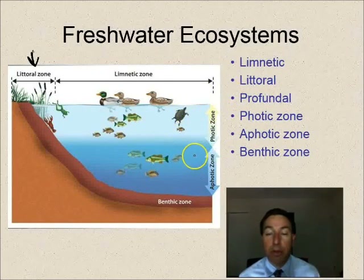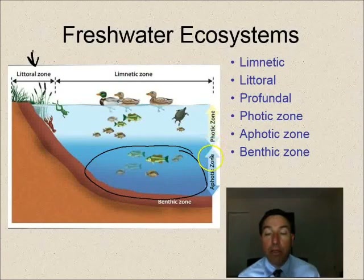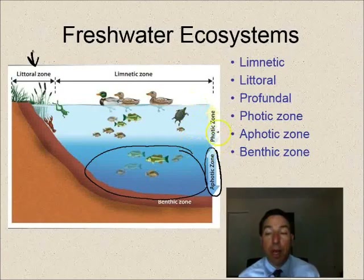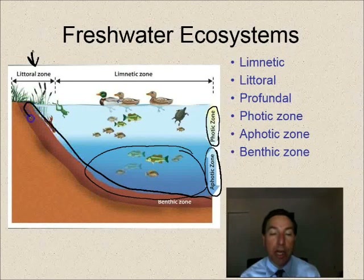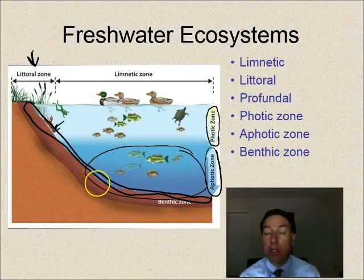As we go deeper we enter the profundal zone, which is dark and cold with no light at all — few fish live here unless specifically adapted. This area is also within the aphotic zone, where no light penetrates, because water is a very good filter of light. Above the aphotic zone is the photic zone where light does penetrate. The benthic zone is the entire bottom zone regardless of depth; organisms living there are called benthos — good examples include crayfish, worms, snails, and clams.